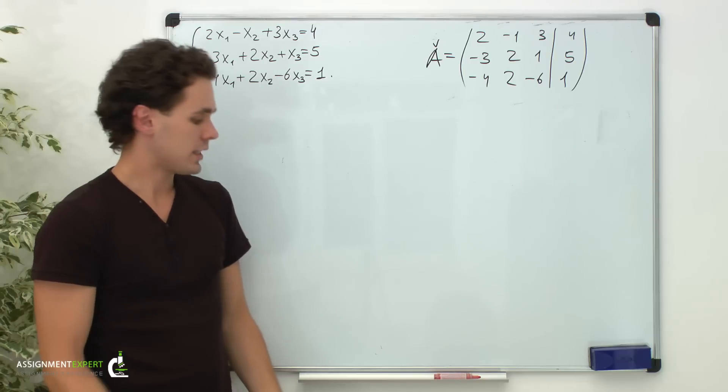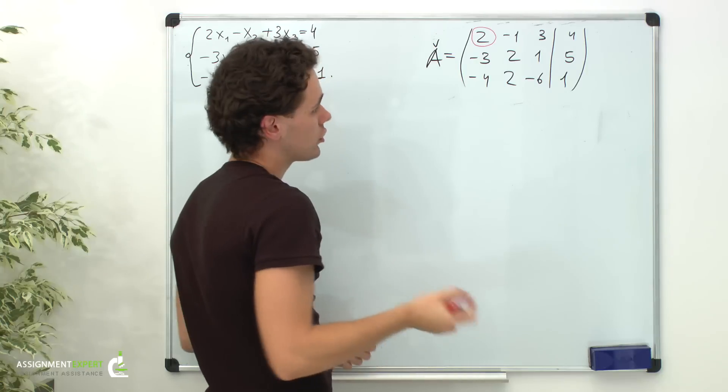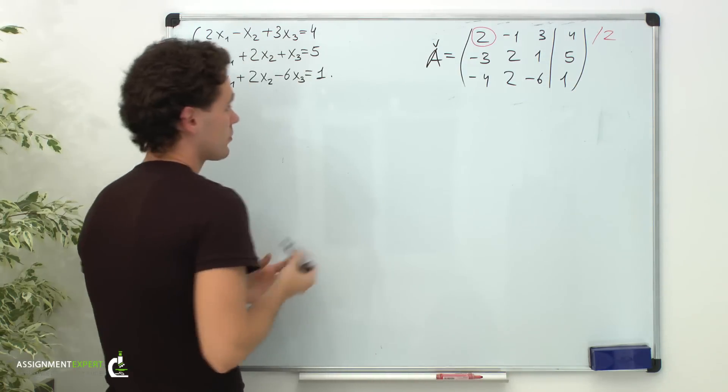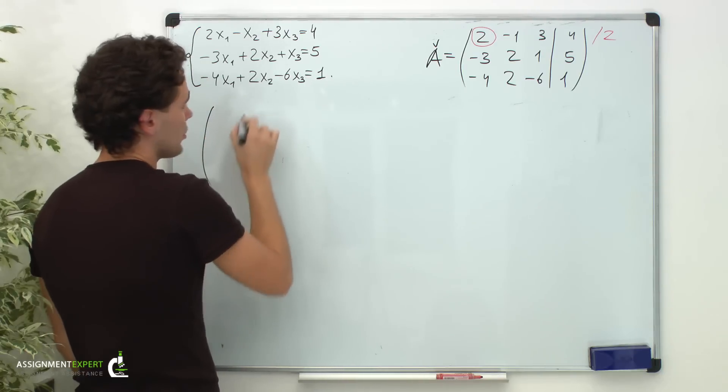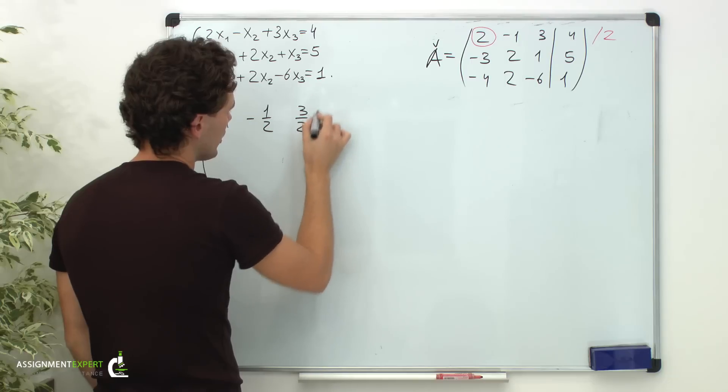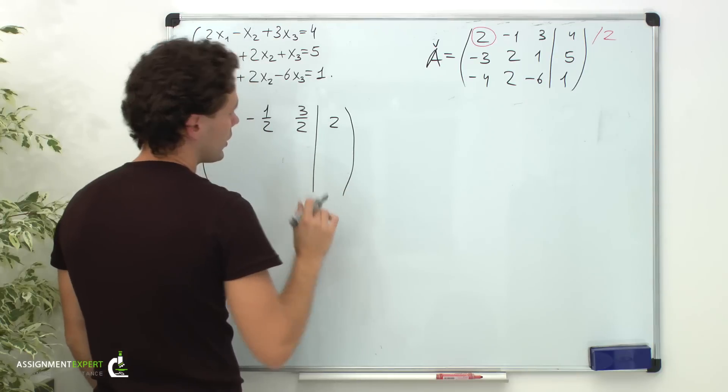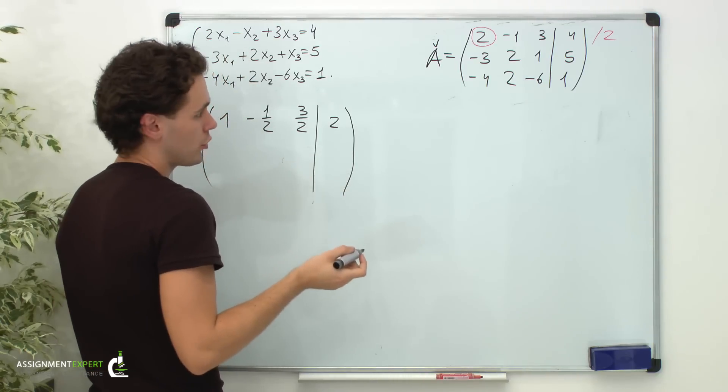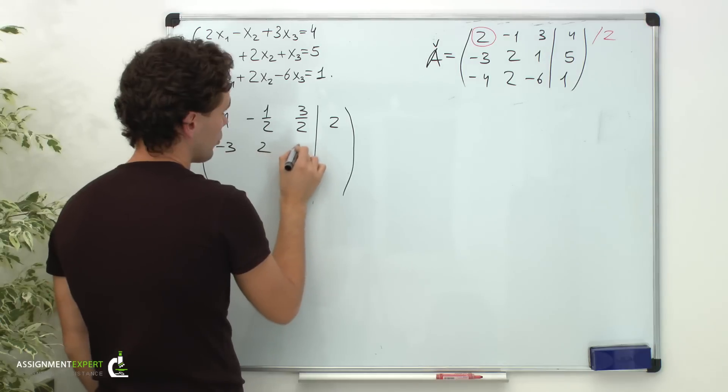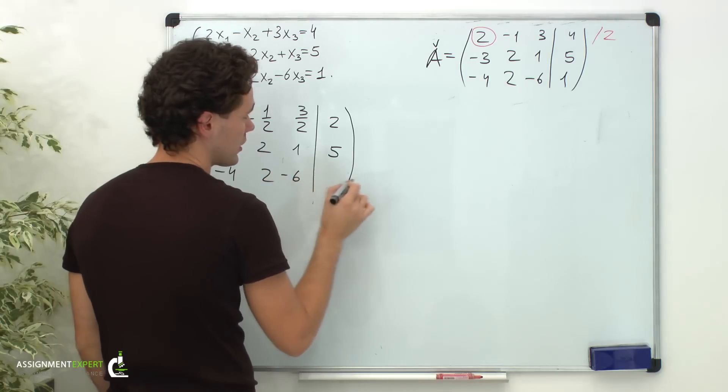Our first step: we need to get 1 on the main diagonal. To do this, we will divide the first row by 2. So, we get 1, negative 1 half, 3 halves, and don't forget the free term, 4 divided by 2 gives us 2. And the second and third row without changes: negative 3, 2, 1, 5 and negative 4, 2, negative 6 and 1.